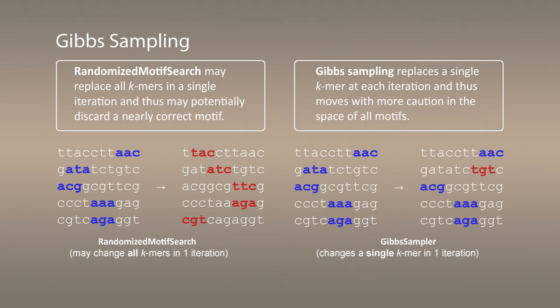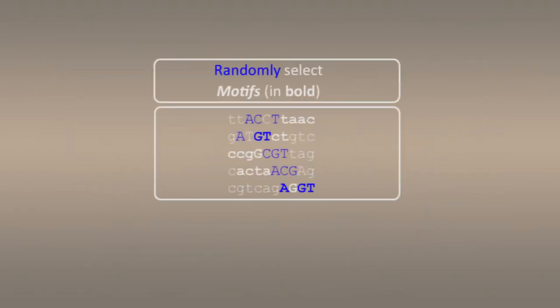Instead of showing you the pseudocode for the Gibbs sampler, let me show you first how it works. Let's first select, as before, motifs shown in bold on this slide, randomly chosen from the set of DNA strings. Blue elements show the implanted motifs, and bold elements show the randomly selected motifs.